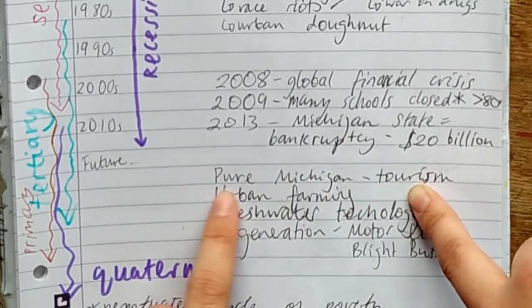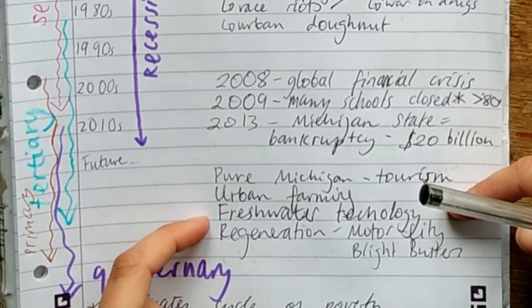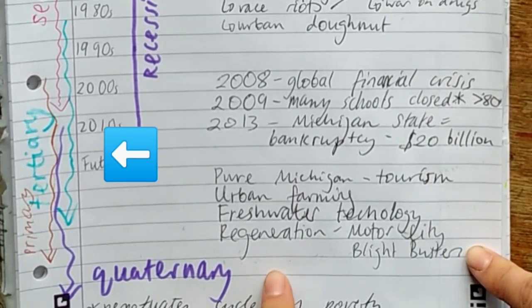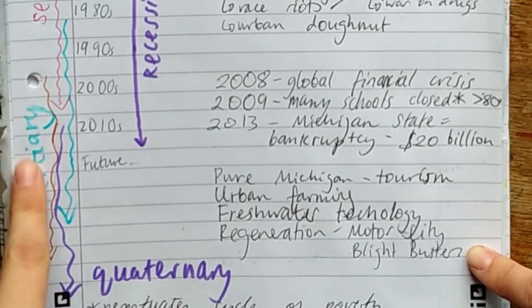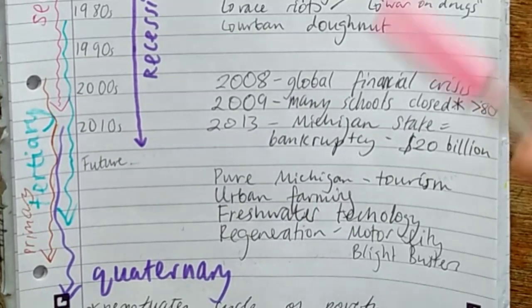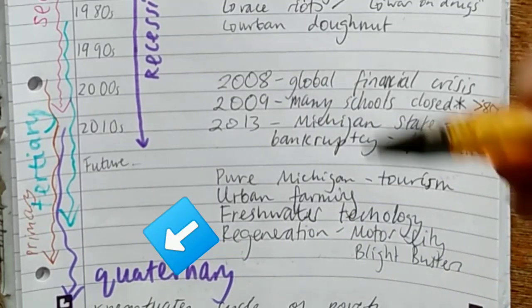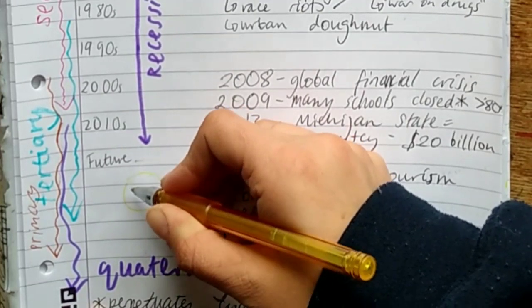Let's have a look at the future of Detroit. Pure Michigan is a tourism scheme that aims to advertise and attract tourists to Michigan, and Detroit is in Michigan. This is an increase in the tertiary sector of Detroit. We've also got people coming in to do urban farming and set up gardens and places to grow vegetables. This is an increase in the primary sector of Detroit. We've got some quaternary industry coming in with freshwater technology. Maybe the future of Detroit is looking a little bit brighter.